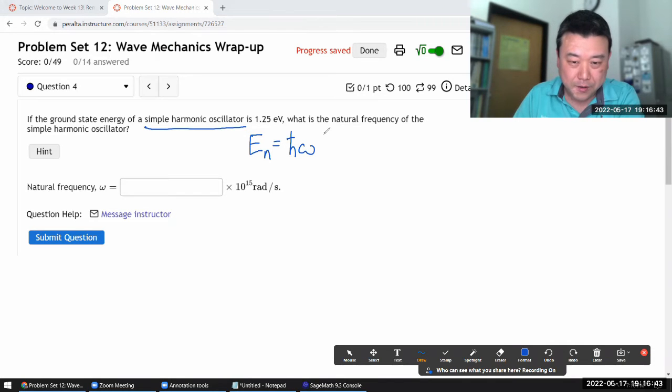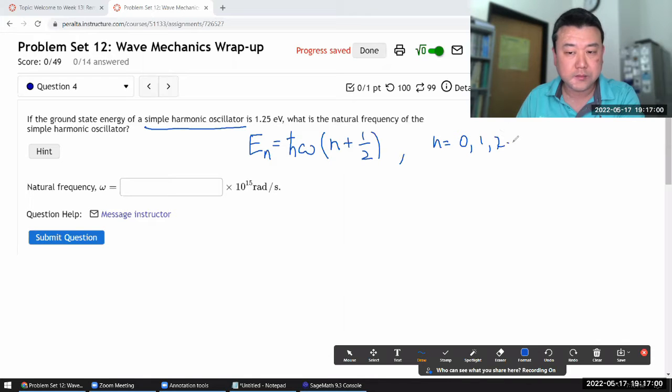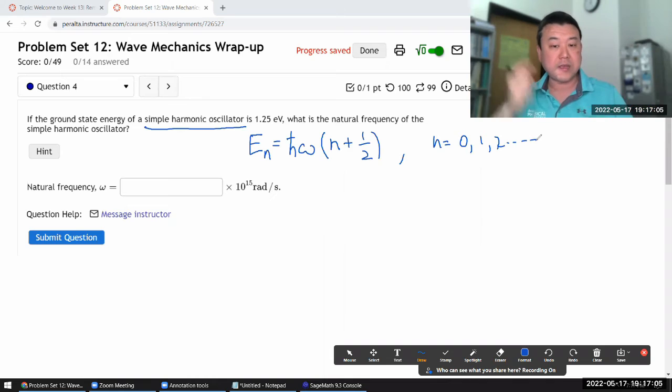Now a bit of a complication here is that it's not just this like a photon energy. It's this times the quantized energy level quantum number plus one half, and n actually starts with zero and then so on. For an ideal simple harmonic oscillator potential that goes to infinity, this n can potentially go up to infinity.